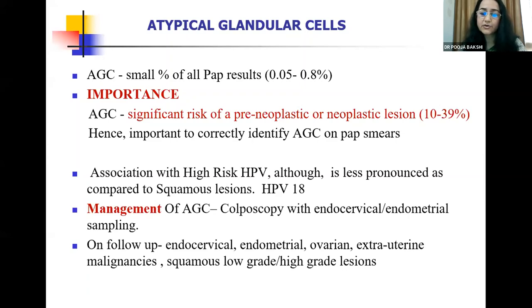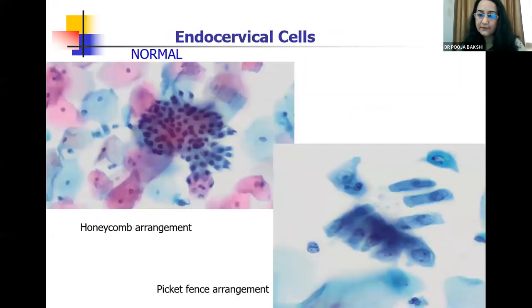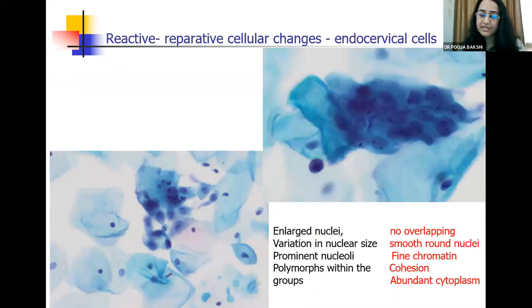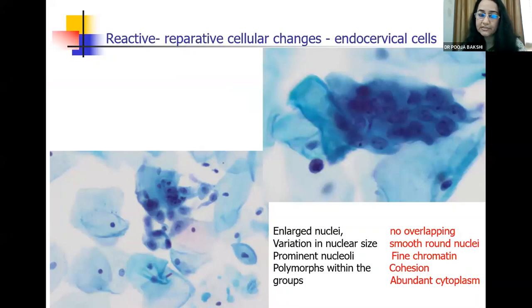Management requires colposcopy and endocervical and endometrial sampling. Normal glandular cells are seen in the pap smear in a classic honeycomb arrangement and from the side view in a picket fence arrangement. There is polarization of nuclei, they are well separated, no overlapping, and the chromatin is fine. Whereas in reactive or reparative changes in the endocervical cells — very common due to inflammation or presence of an endocervical polyp — we will see nuclear enlargement and prominent nucleoli. However, the nuclei are still well separated, no significant overlapping, there is still moderate to abundant cytoplasm, and you may see polymorphs within these groups of endocervical cells.